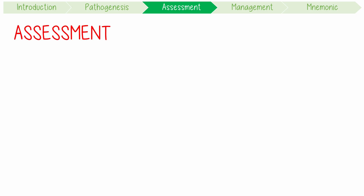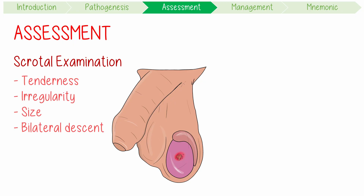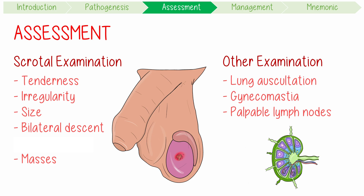The assessment of testicular cancer requires scrotal examination, involving assessment for tenderness, irregularity, size, bilateral testicular descent, and masses. Extratesticular exams should also be included, such as lung auscultation, checking for gynaecomastia, and palpable lymph nodes, especially supraclavicular ones.